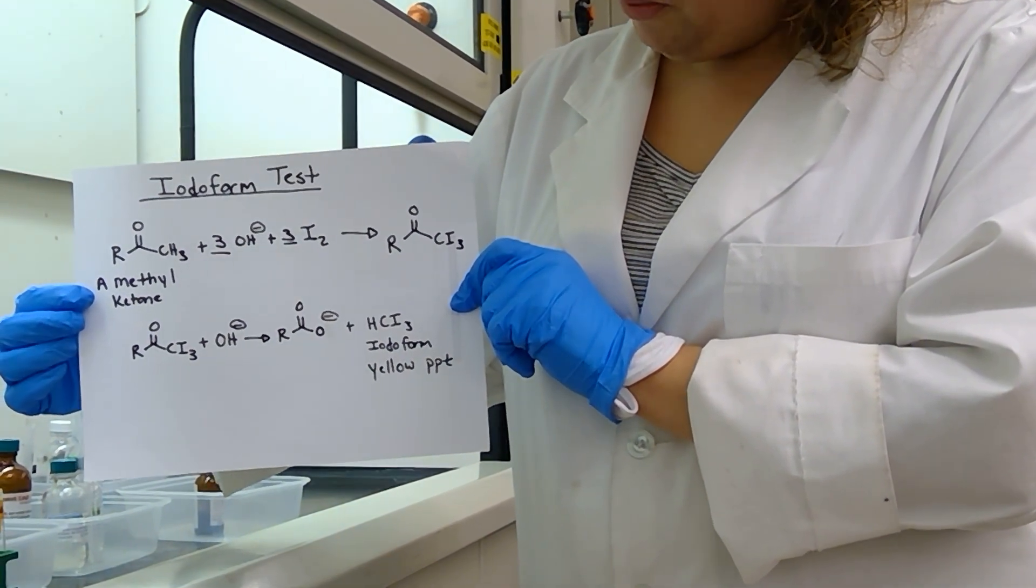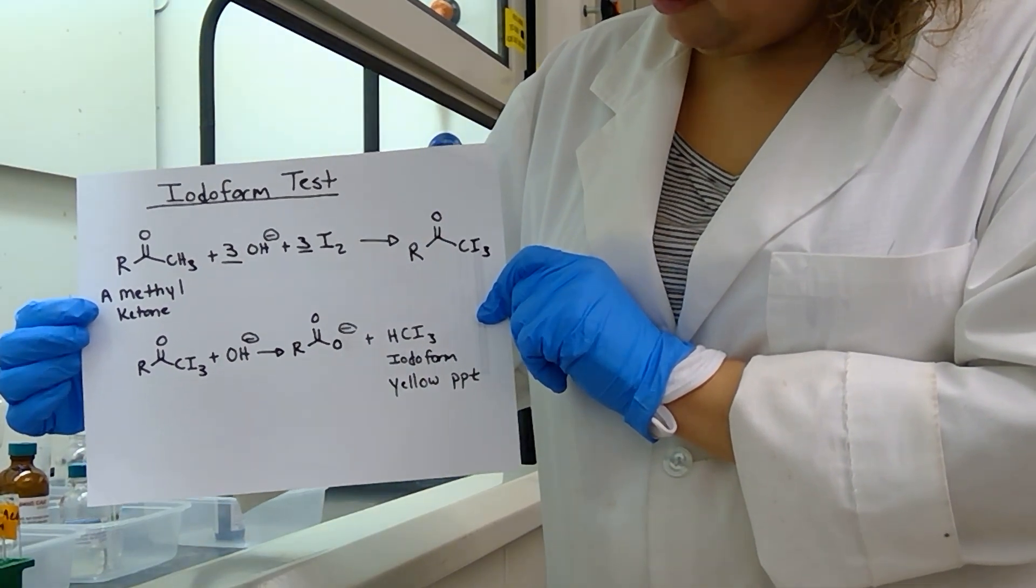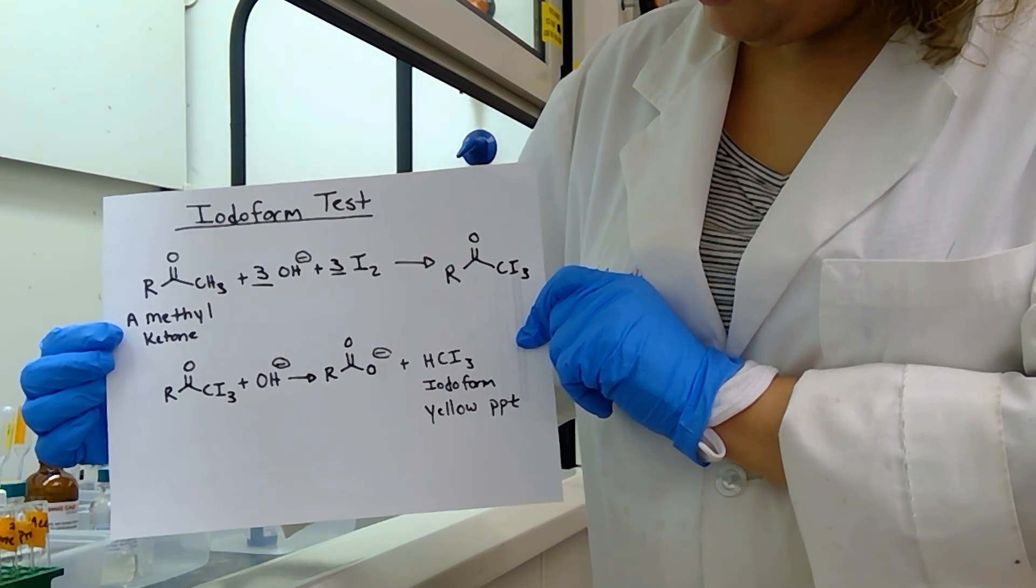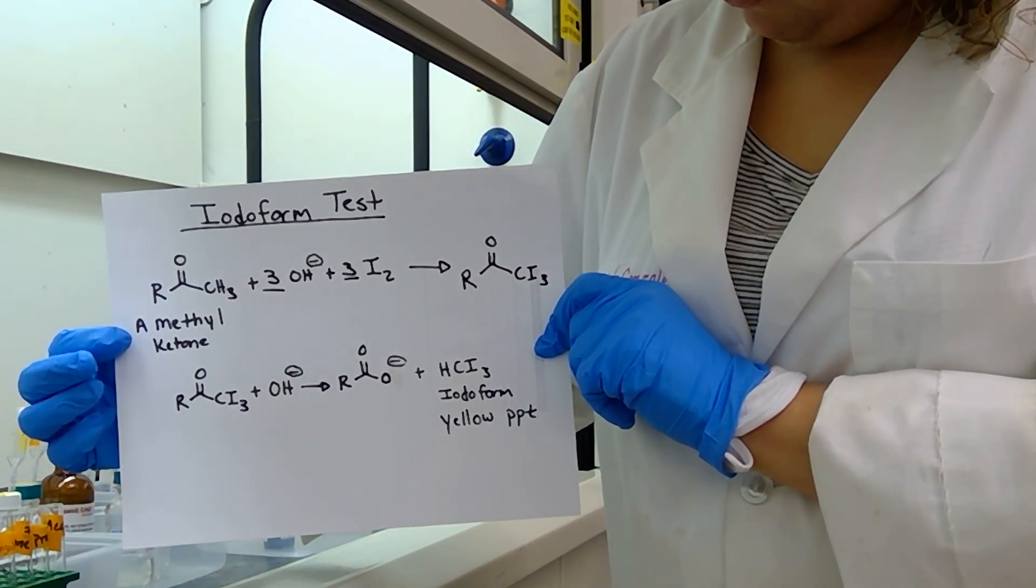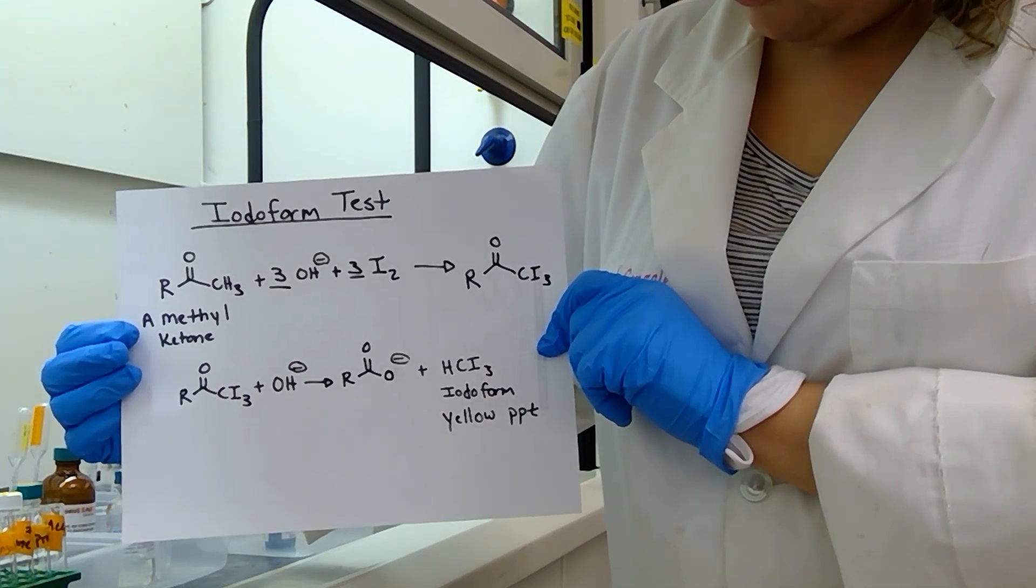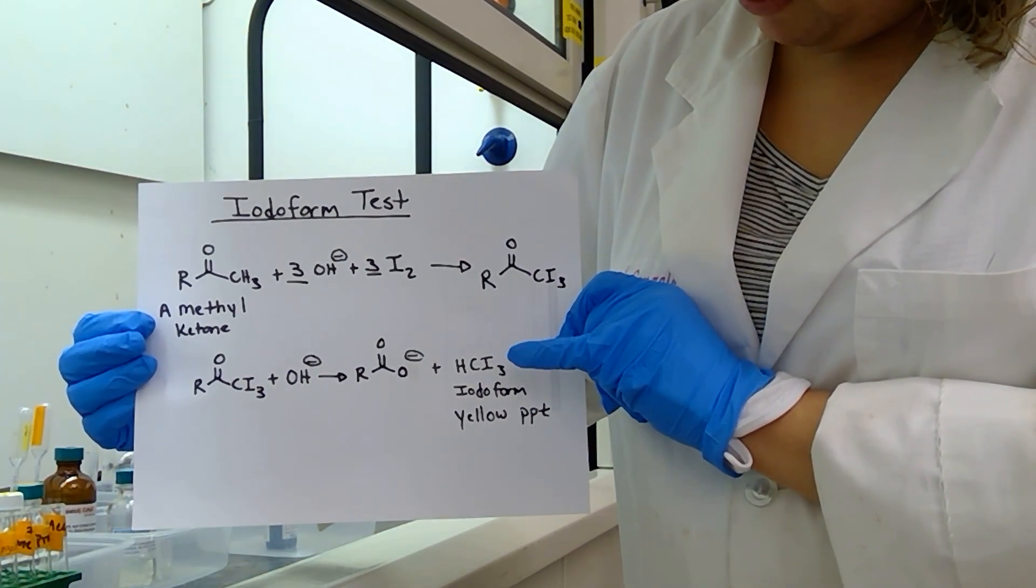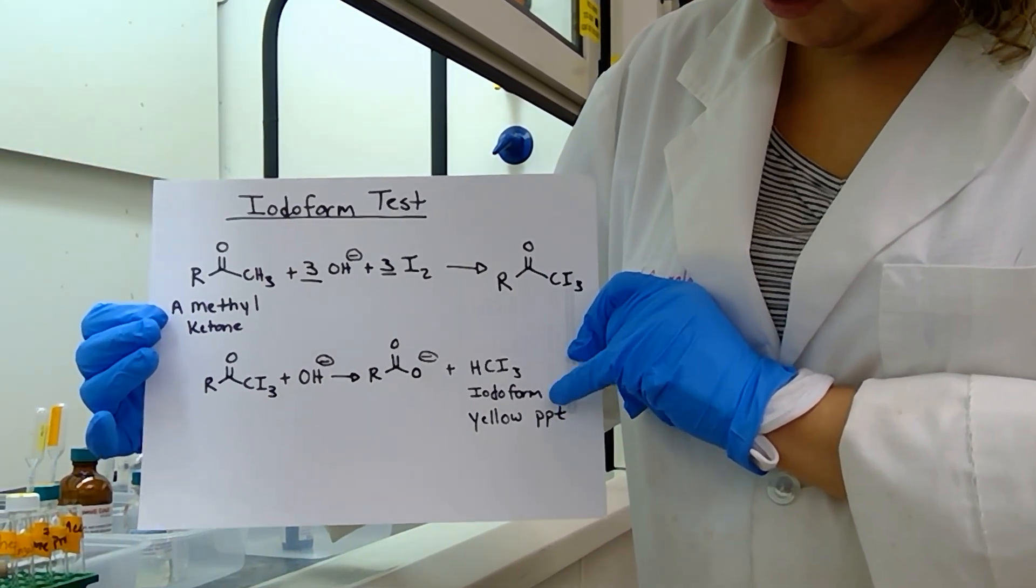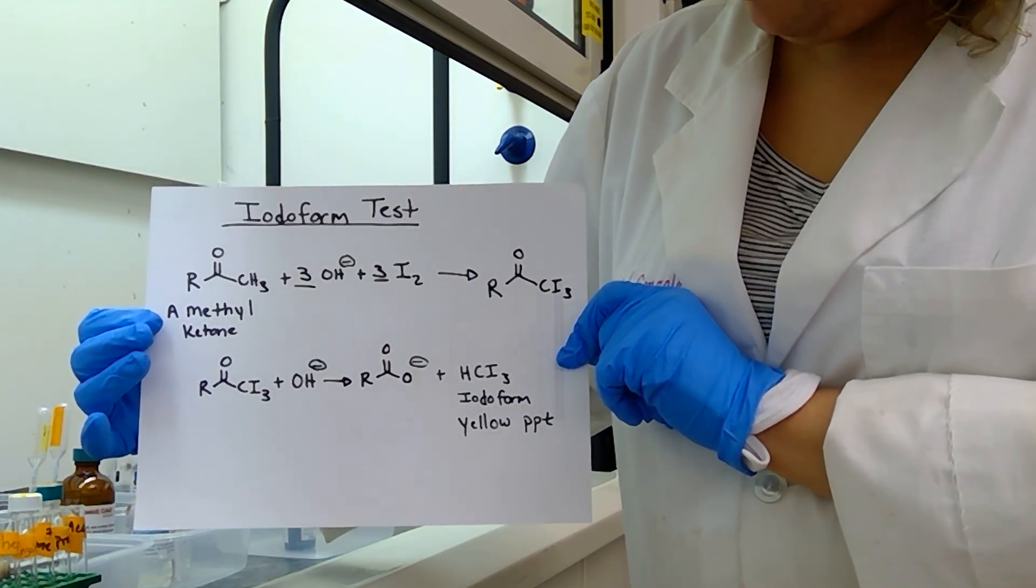Next up we have the iodoform test for experiment 20. For this particular test we are looking for a methyl ketone to react with some sodium hydroxide and iodine, and we will form a tri-iodo ketone if we do have a methyl group. Eventually we will turn that ketone into a carboxylate and form the iodoform molecule which is a yellow precipitate.